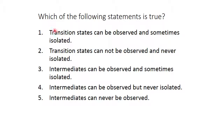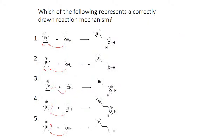Which of the following statements is true? Transition states can be observed and sometimes isolated — that is absolutely not true; they cannot be observed or isolated, only inferred from reaction evidence. Intermediates can be observed and sometimes isolated — they can be detected by spectroscopy, but they're ephemeral and can never be isolated. Intermediates can never be observed — no, spectroscopy is fast enough to detect them. So the true statement is that intermediates can be observed but never isolated. Looking at another option: transition states cannot be observed and are never isolated — this is also true. So there are really two true statements here.